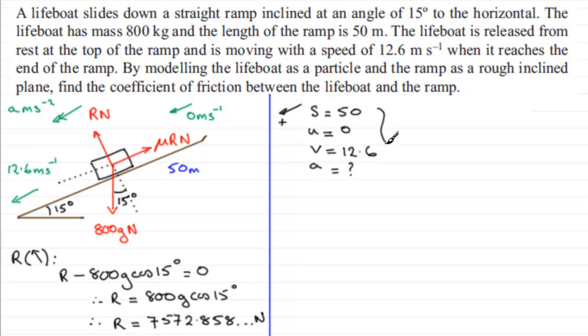We're looking for an equation that connects S, U, V, and A together, and that equation is v squared equals u squared plus 2as. If we put in our values, we have 12.6 squared equals u squared, which is 0, plus 2 times a times 50. To get the acceleration a, all I've got to do is work out 12.6 squared and divide it by 100. You'll find that you get a to be 1.5876 meters per second squared.